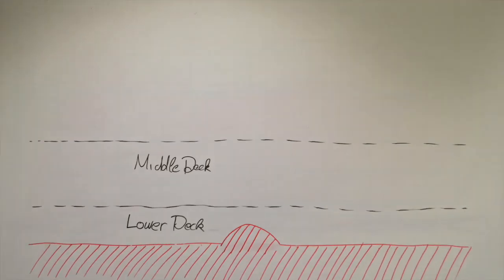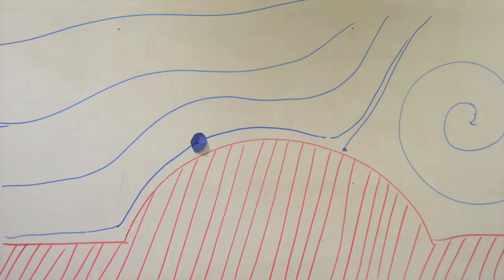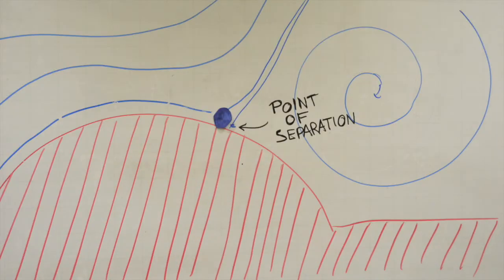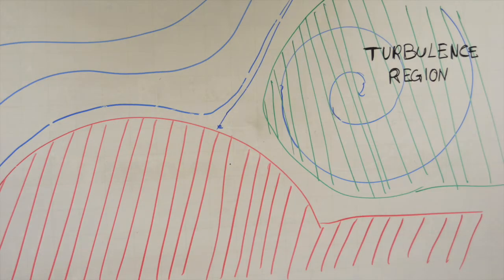The middle and lower deck are inside the boundary layer. In the lower deck, the streamlines originally start to follow the bump, but they reach a point where the flow separates from the wing. The swirliness appears to the right of the bump. The technical term for this is that the flow becomes turbulent.